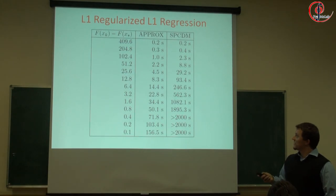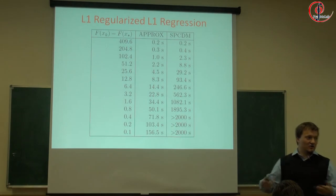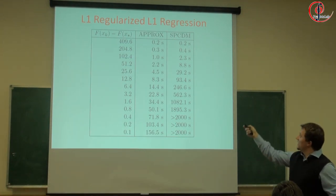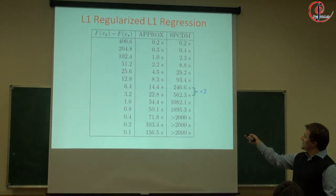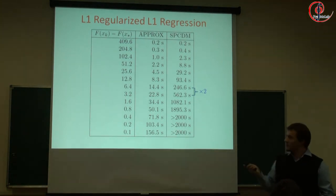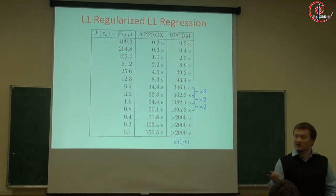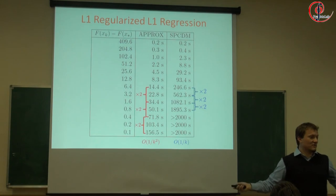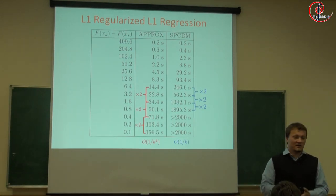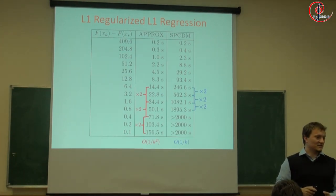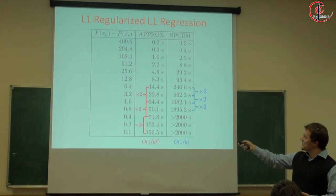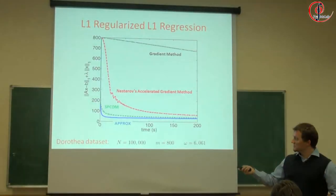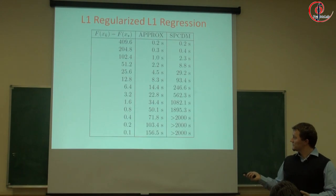Here's another experiment: essentially SPCDM and APROX do about the same, though eventually APROX is better. This is a larger problem: 19 million coordinates, 30 million rows, with at most 75 non-zeros per row — so very sparse. We're running on 16 processors. The dataset is KDDB; my co-author chose this and I'm not 100% sure about it, but I think it's probably from LIBSVM's collection.